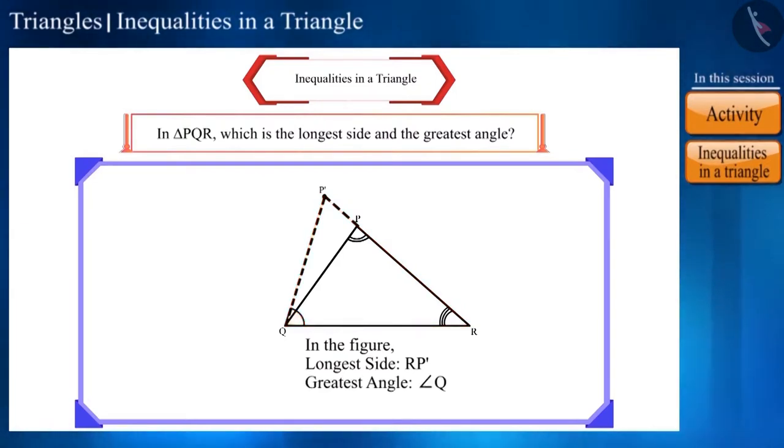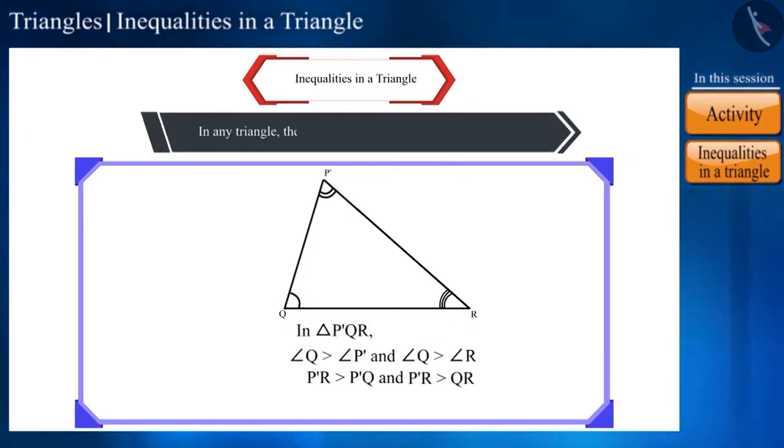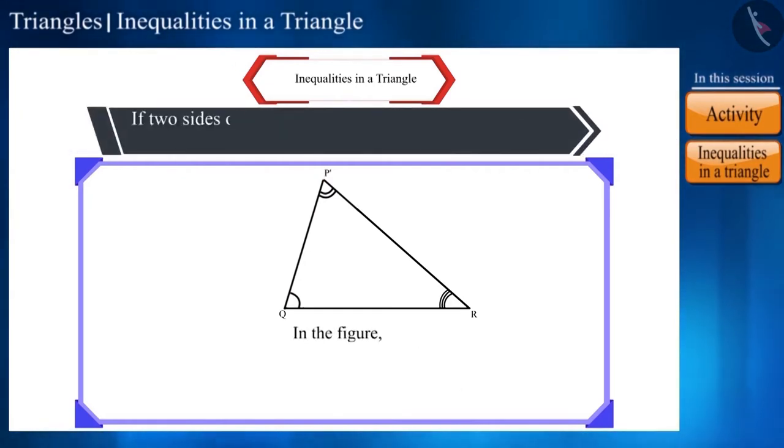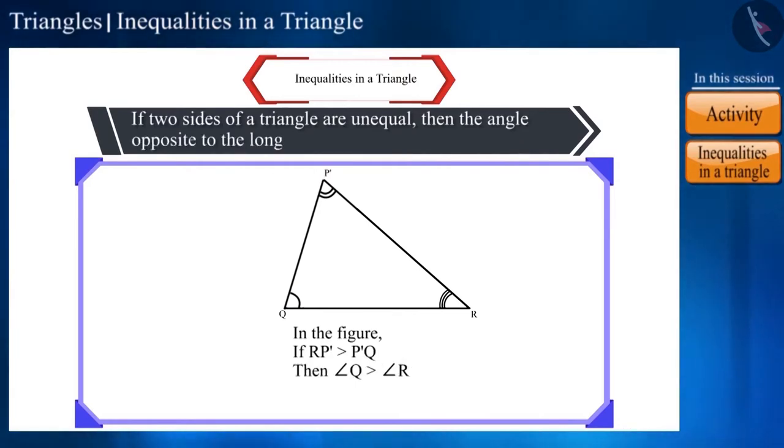There are two theorems based on this concept. In any triangle, the side opposite to the greatest angle is longer. If two sides of a triangle are unequal, then the angle opposite to the longer side is greater.